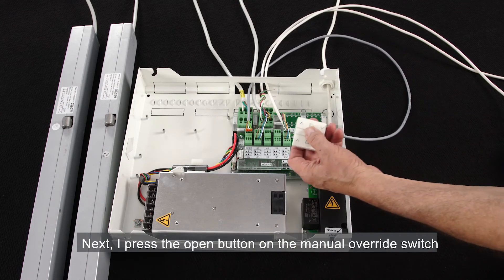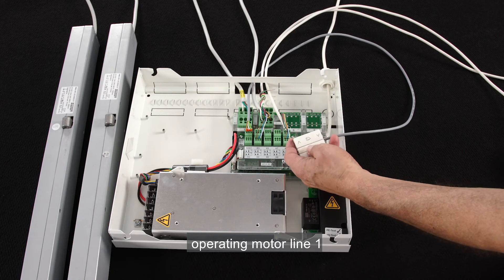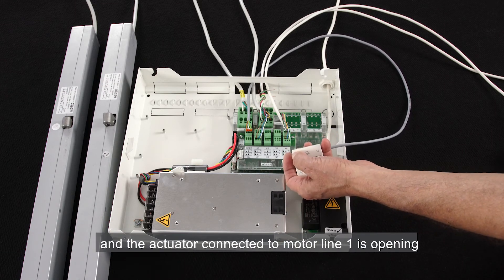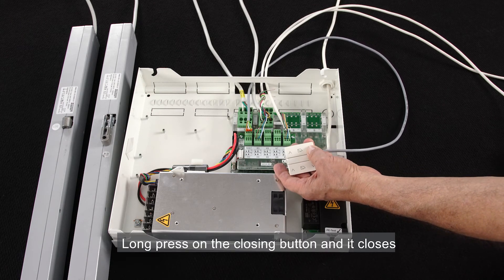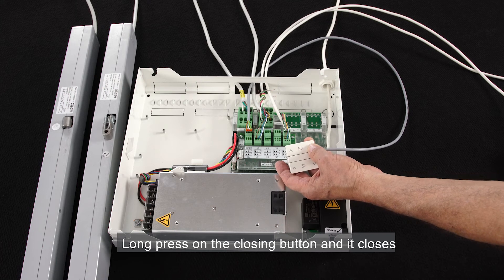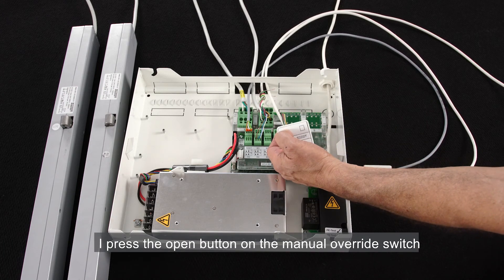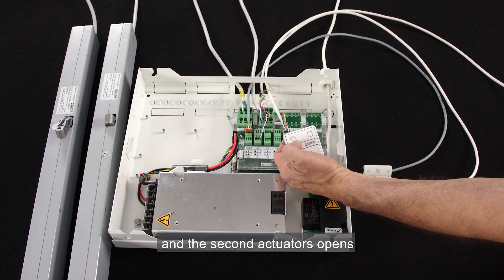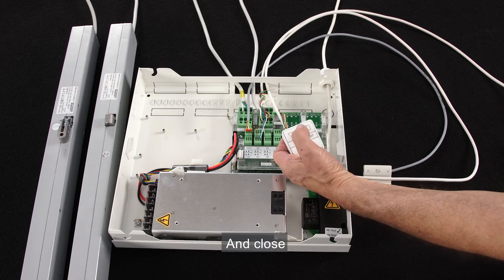Next, I press the open button on the manual override switch operating motor line 1 and the actuator connected to motor line 1 is opening. Long press on the closing button and it closes. I press the open button on the manual override switch operating motor line 4 and the second actuator opens. Stop and close.